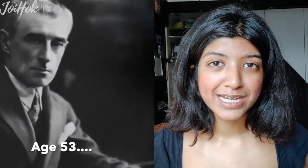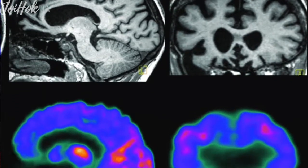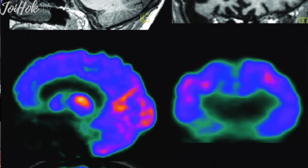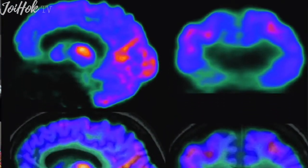Ravel is best known for his masterpiece, Bolero, which he composed at the age of 53 years old. Around this time, he started developing the early symptoms of a neurological disorder called FTD.